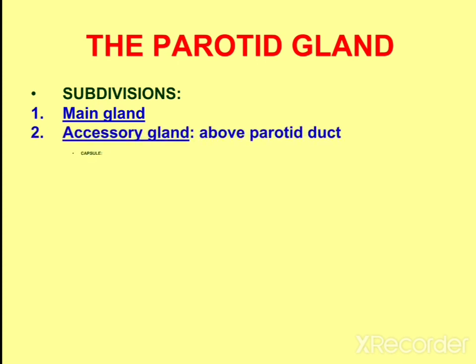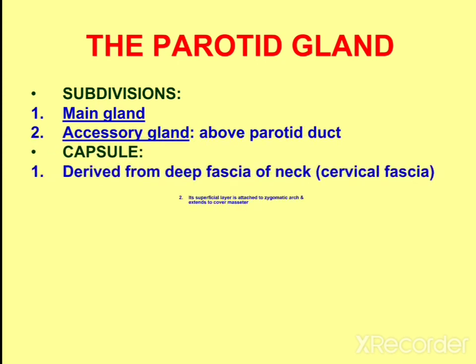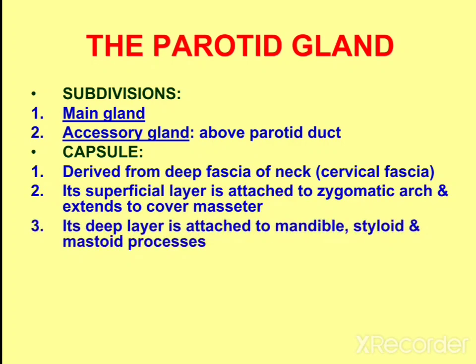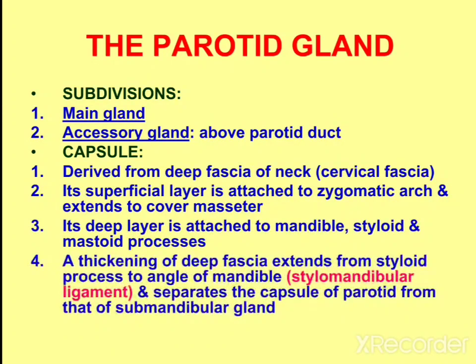The subdivisions of the parotid gland include the main gland and the accessory gland. The accessory gland lies above the parotid duct. There are capsules surrounding the parotid gland, which are derived from the deep fascia of the neck, that is the cervical fascia. Its superficial layer is attached to the zygomatic arch and extends to cover the masseter, and the deep layer is attached to the mandible, styloid process, and mastoid process.